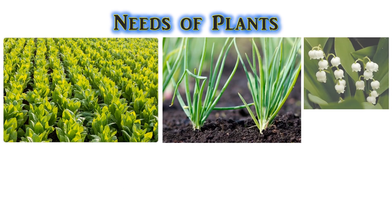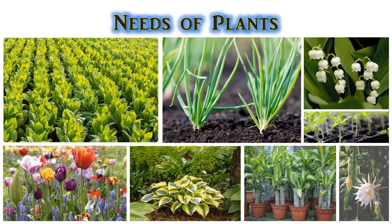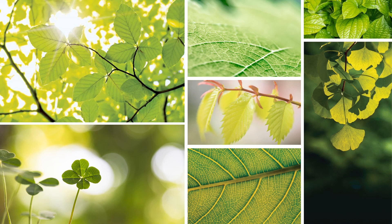Like humans and animals, plants have needs too. Plants need air to live. They take in air through pores known as stomata on their leaves. There are more stomata on a leaf's lower surface than on its upper surface.